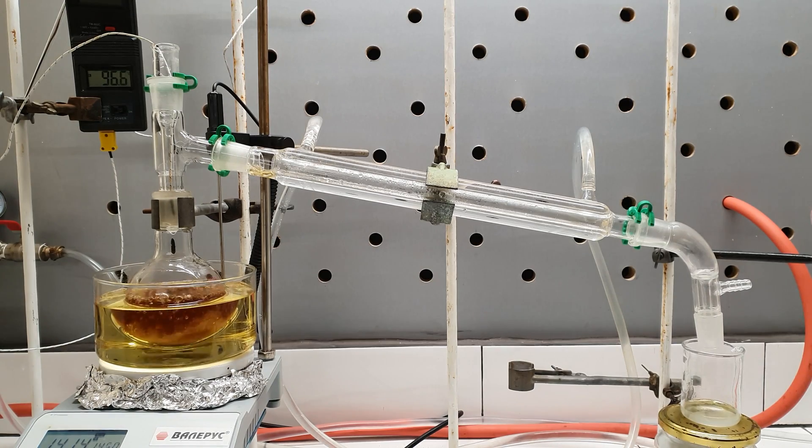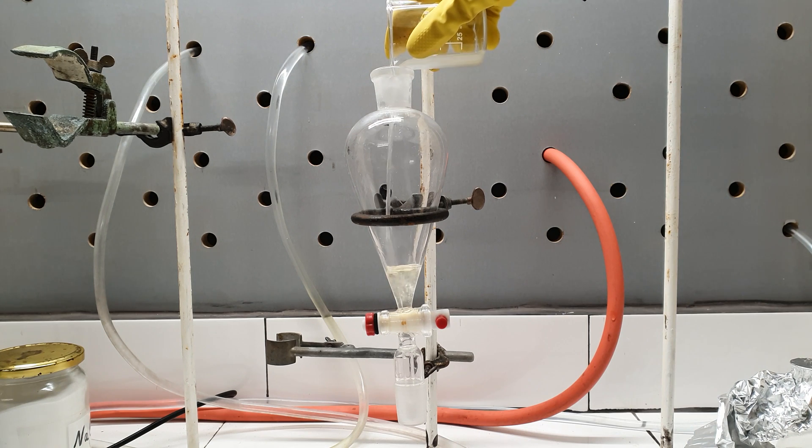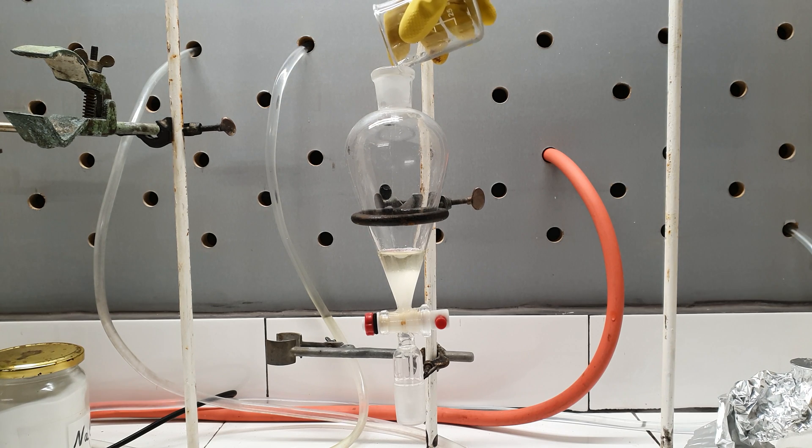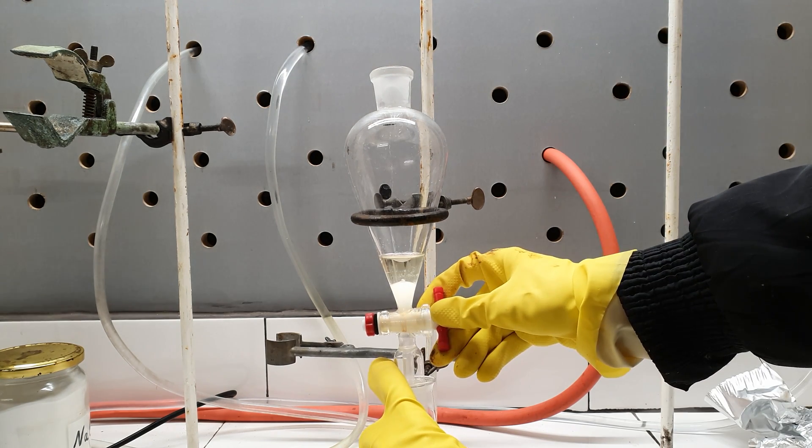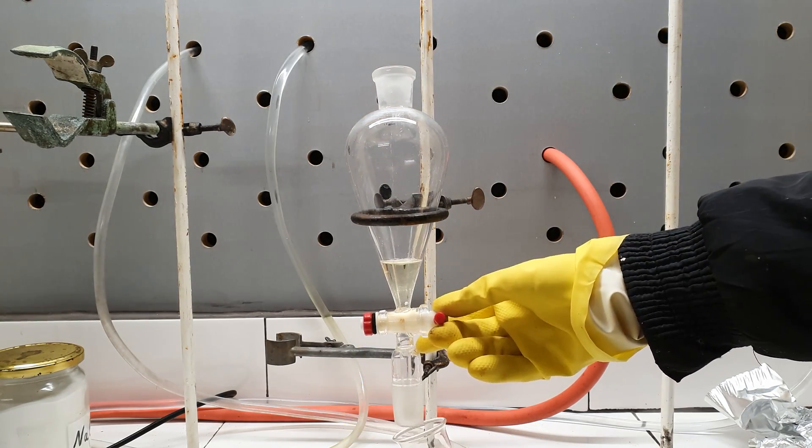When no more nitromethane came off, I stopped the distillation and transferred the distillate in my separatory funnel. The lower nitromethane layer was drained and the upper water layer was discarded.